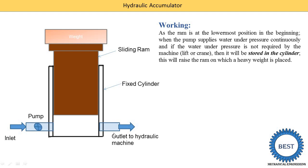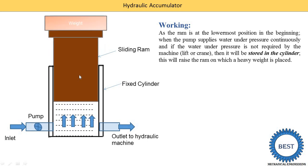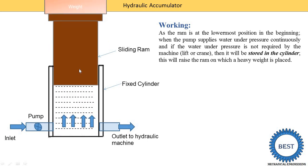When the hydraulic machines do not require any pressure energy, the water or liquid is stored inside the cylinder and it raises the ram on which the heavy weight is placed. When water is stored, the sliding ram starts moving in the upper direction because the pressure energy of the liquid applies pressure on the sliding ram, moving it upward to a new position.